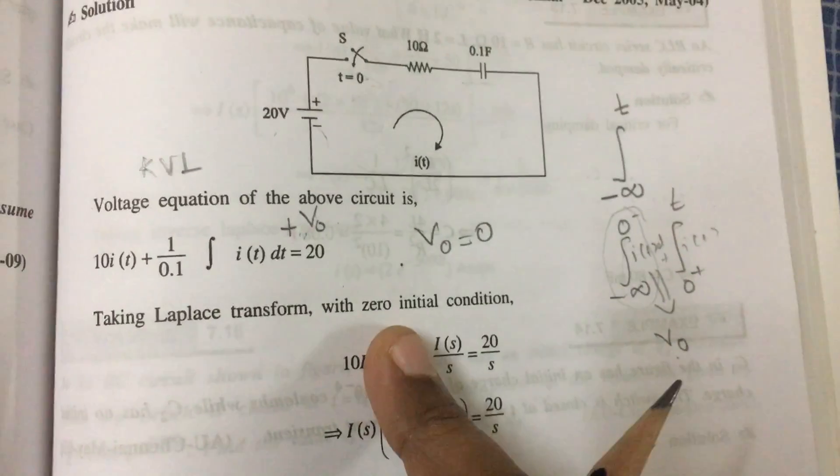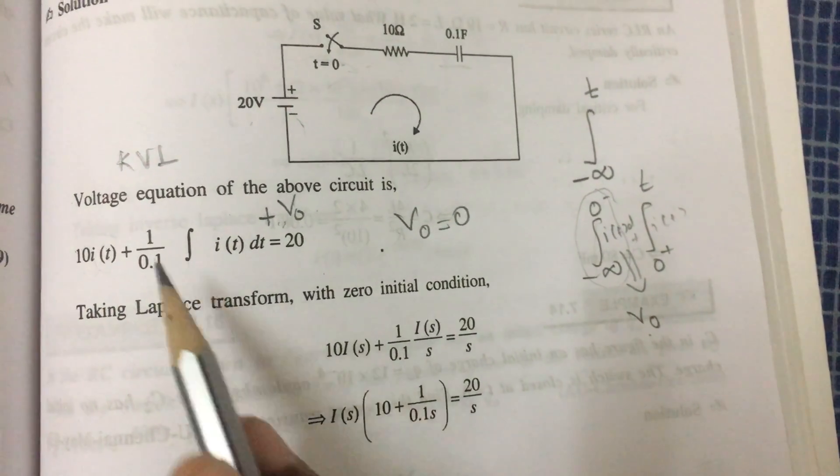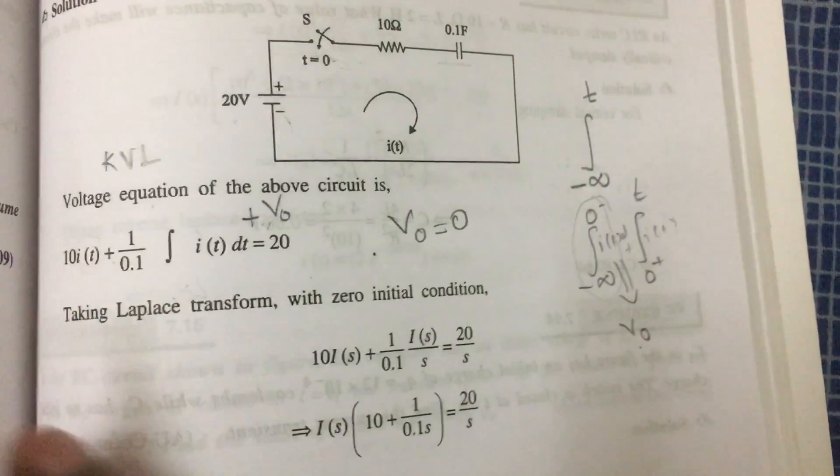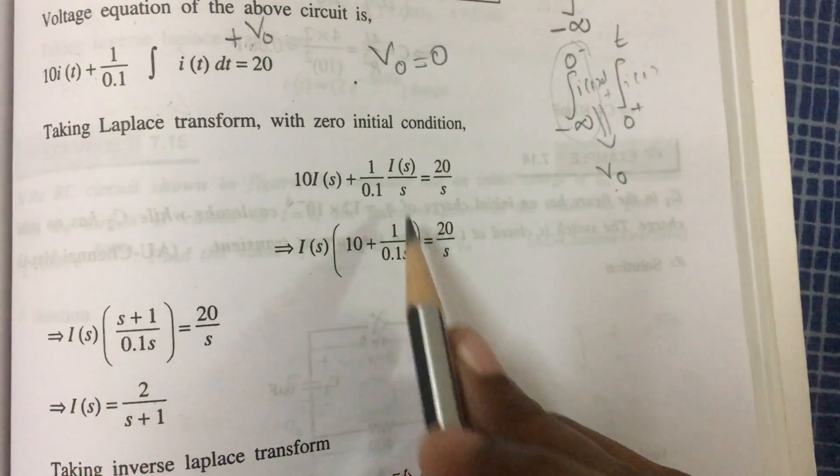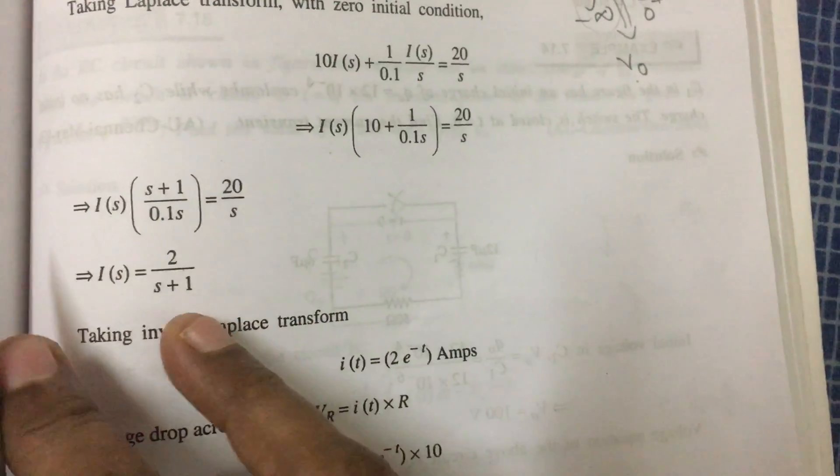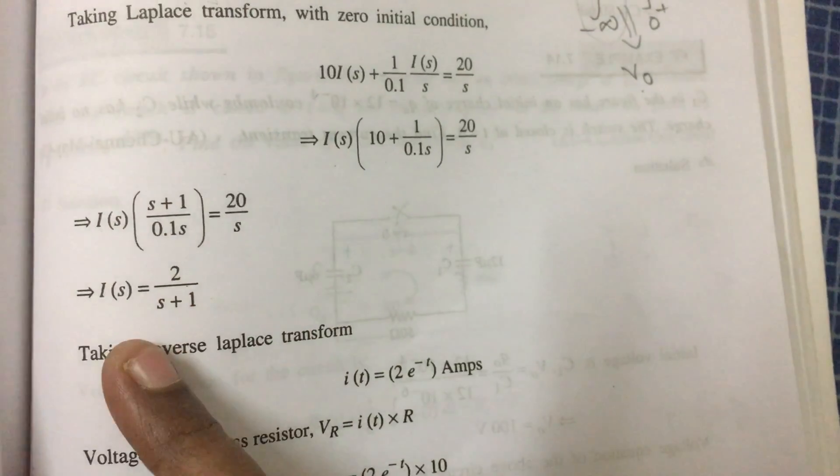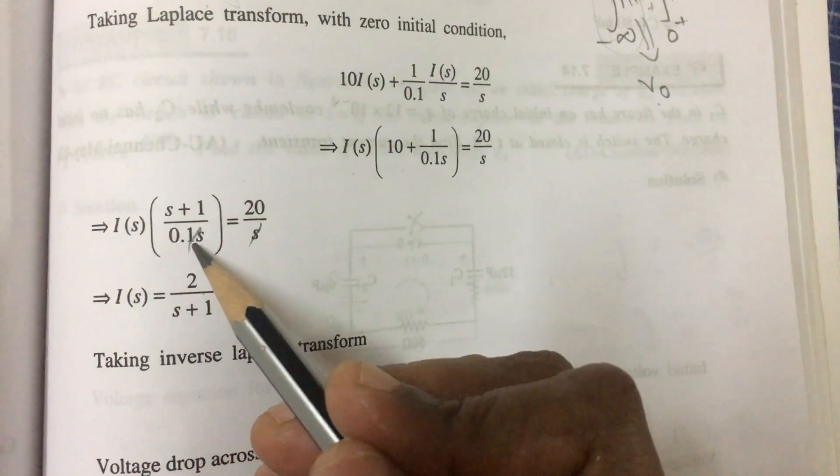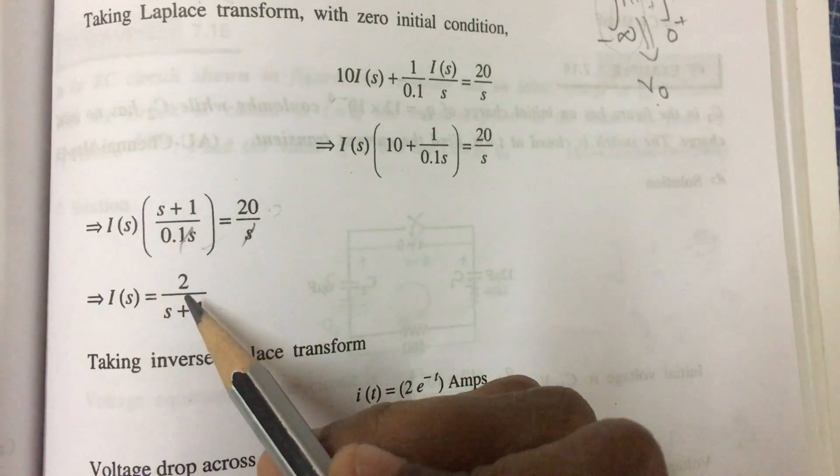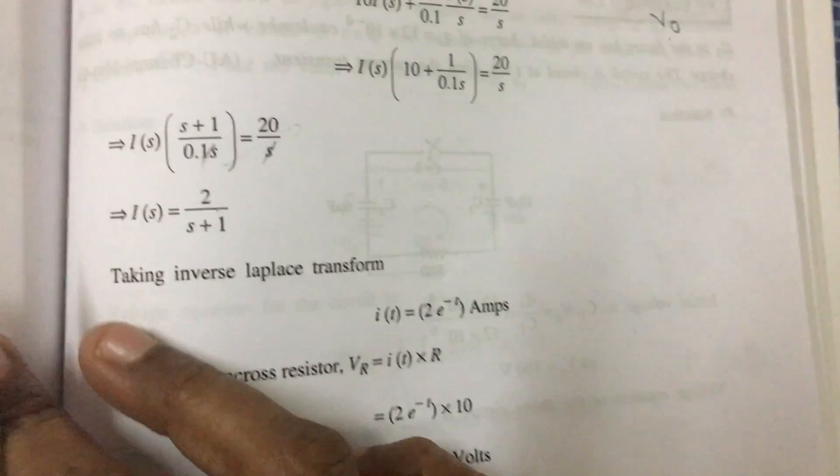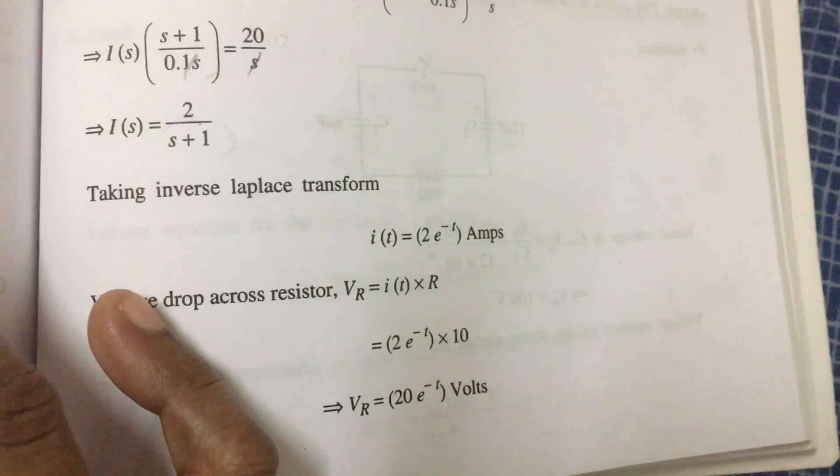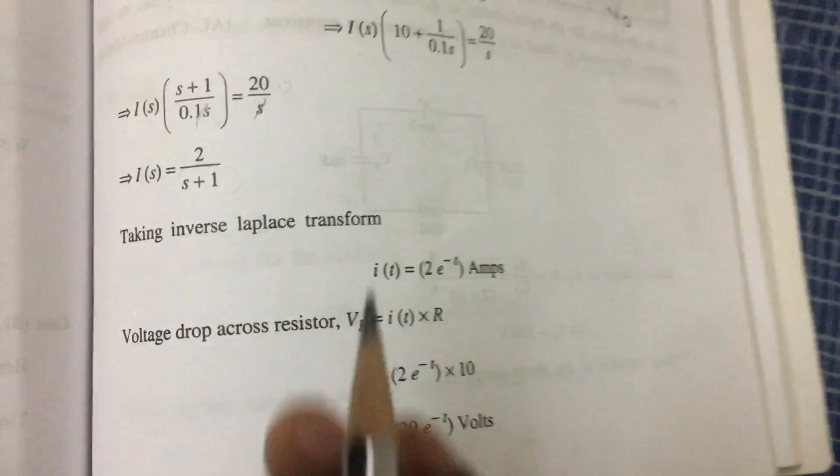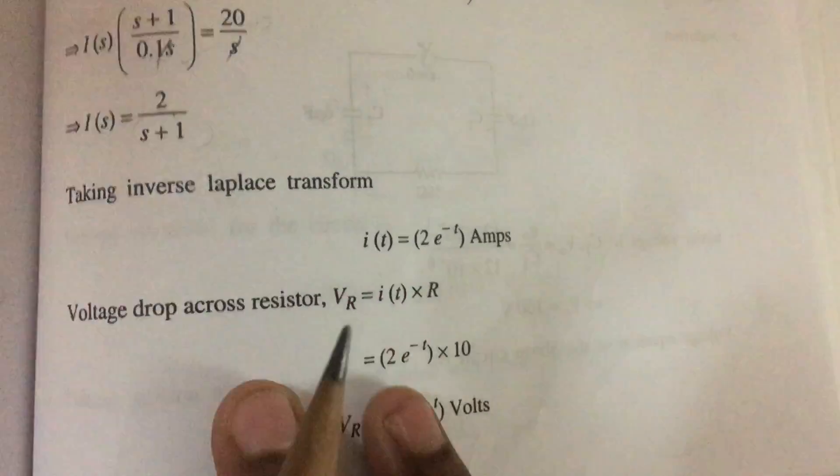Now we take the Laplace transform. 10 into i(s) plus 1 by 0.1, and the Laplace transform of integration is 1 by s, so i(s) by s equals 20 by s. Take i(s) common: 10 plus 1 by 0.1. Take LCM: s plus 1 divided by 0.1s. The s's cancel, so 20 into 0.1 is 2 divided by s plus 1. There are two terms, but only one here, so you can take inverse Laplace transform directly. i(t) equals 2 into e power minus t.